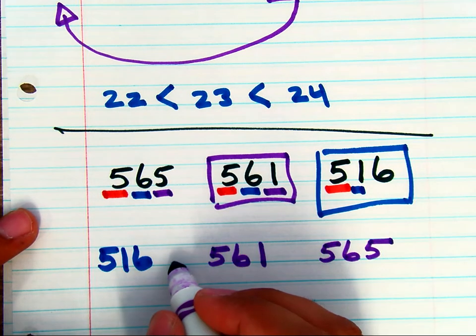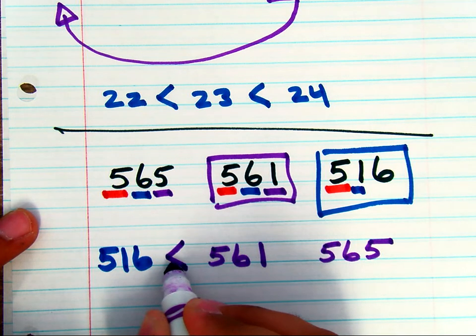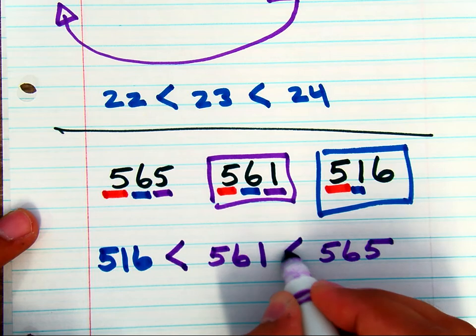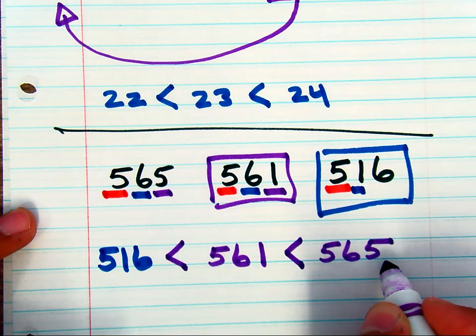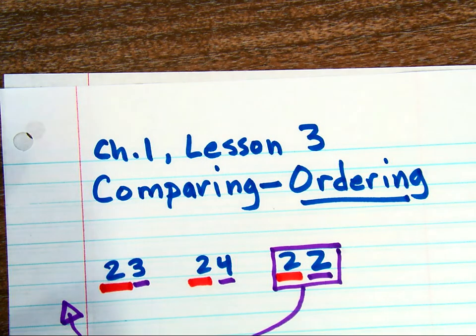And now, we want to make sure we show that 516 is less than 561, which is less than 565. And that is Chapter 1, Lesson 3, Comparing and Ordering Numbers.